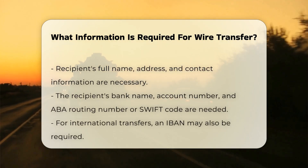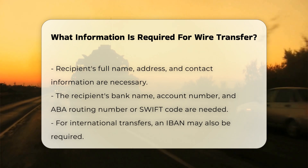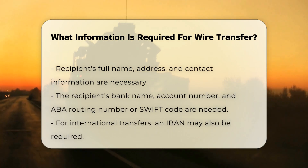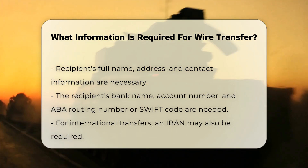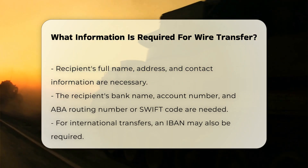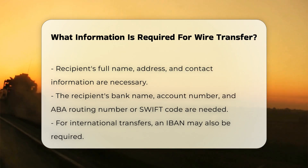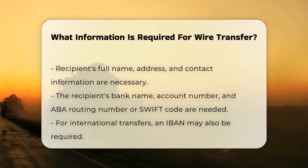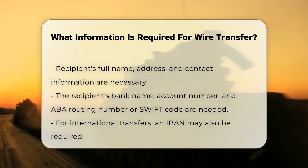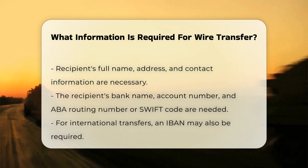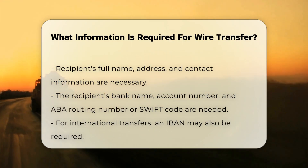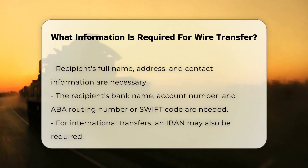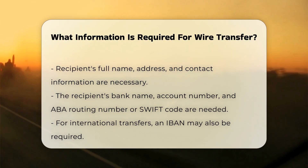Recipient's information: For the recipient, the following details are necessary — full name, address, contact information such as a phone number, bank name, bank account number, and ABA routing number for domestic transfers.